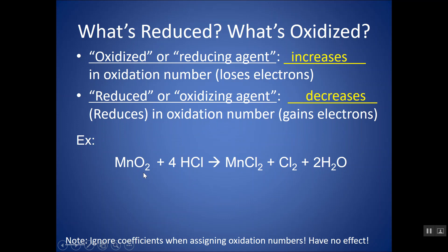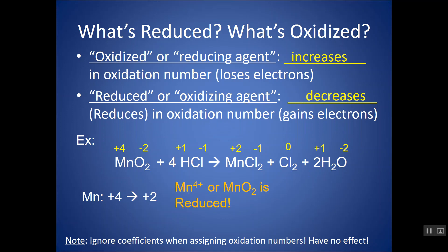For MnO2: O is minus two, so Mn is plus four. For HCl: H is plus one, Cl is minus one. On the product side, in MnCl2: Cl is minus one, making manganese plus two. Cl2 by itself is zero. In H2O: O is minus two, H is plus one. Mn goes from +4 to +2 — it's going down, so manganese is reduced. If it's multiple choice, pick how it appears on the left-hand side: Mn⁴⁺ or MnO2 is reduced.